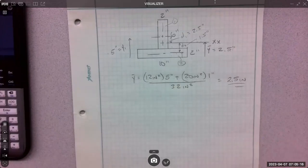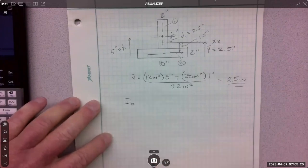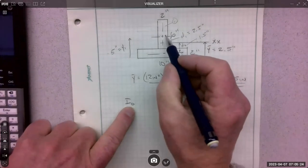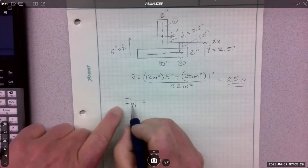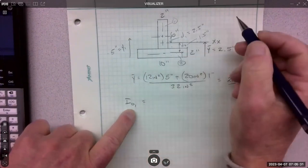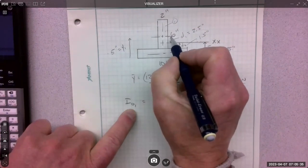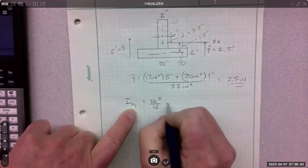So before you run the transfer formula, you got to find the individual inertias. And a lot of times those are identified as I sub O, so like about their own origin. And I always write a one. So this is going to be the inertia of shape one about its own centroid. You've got to find that first.